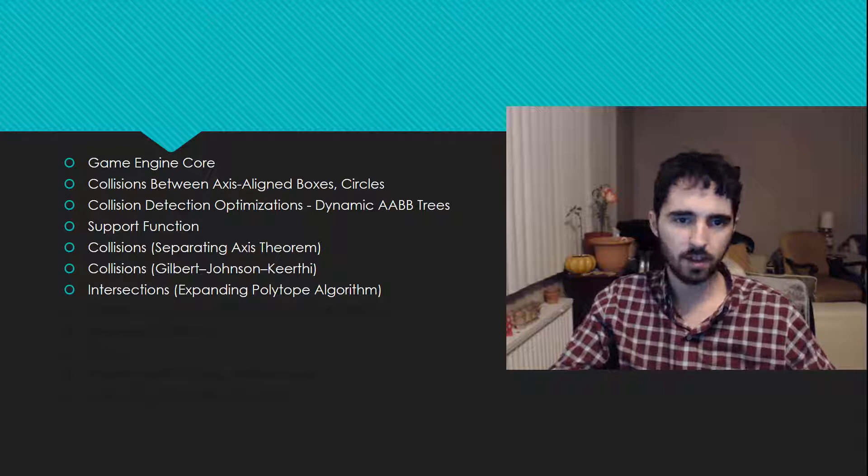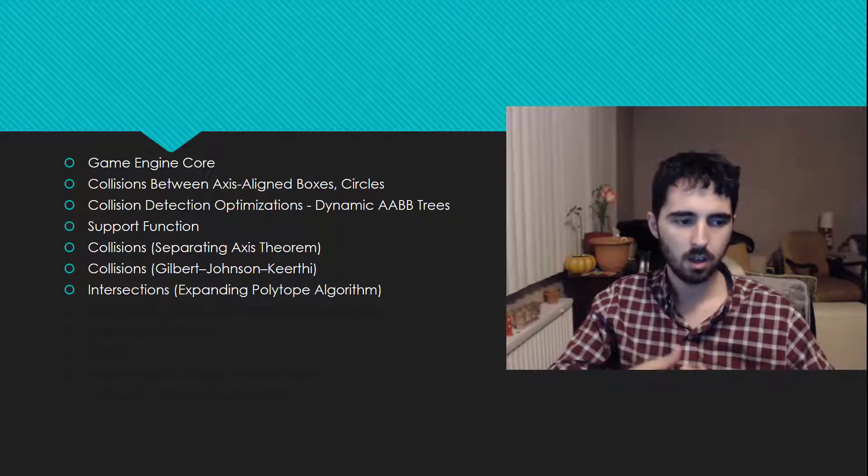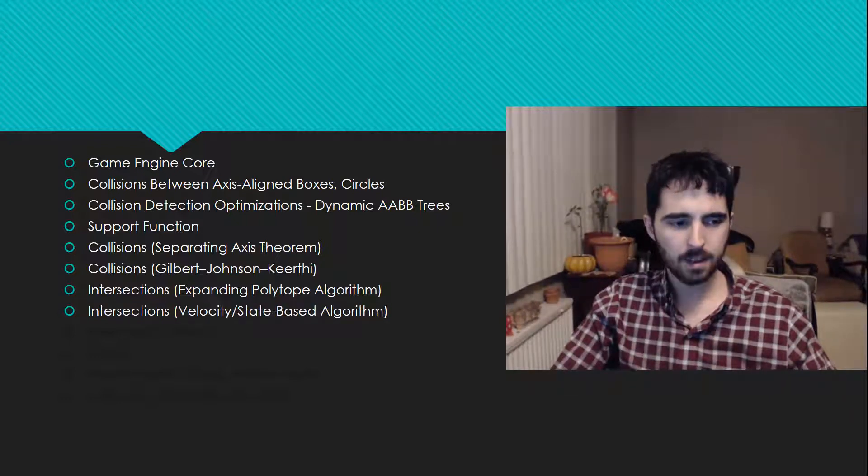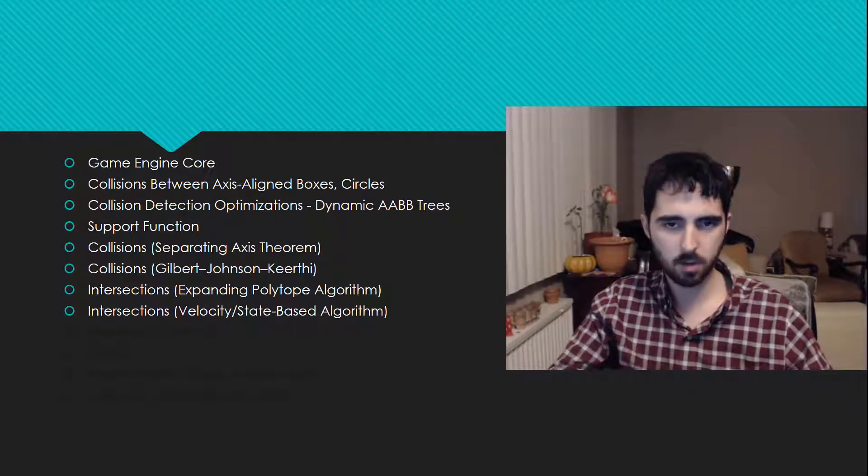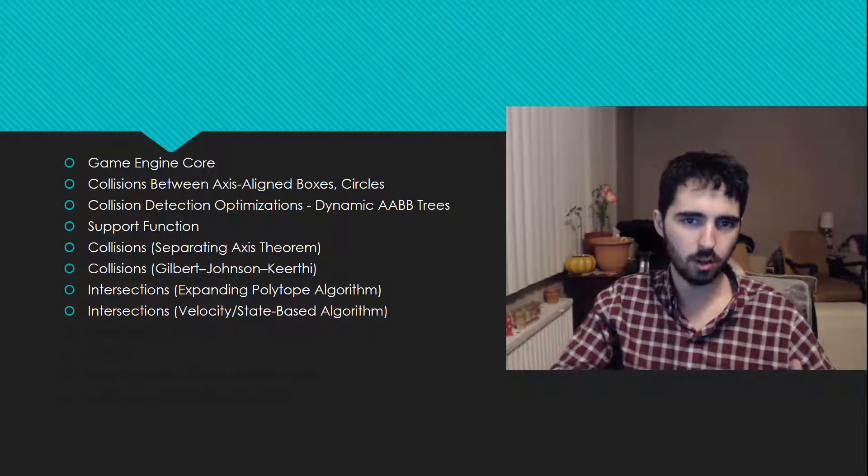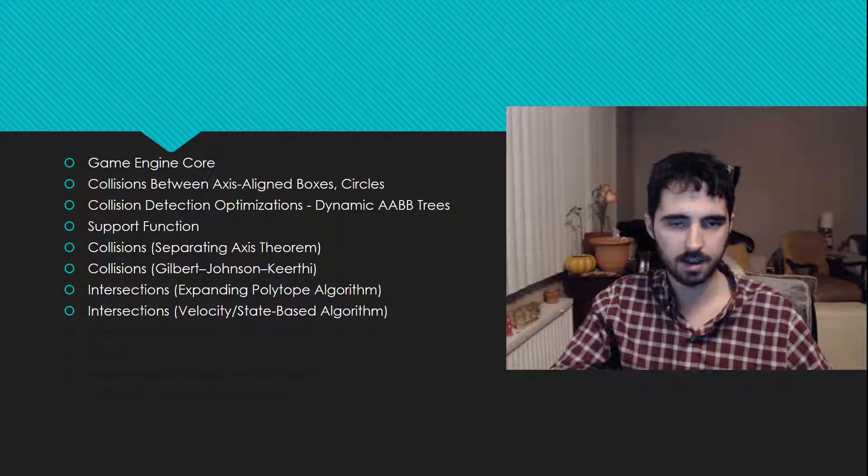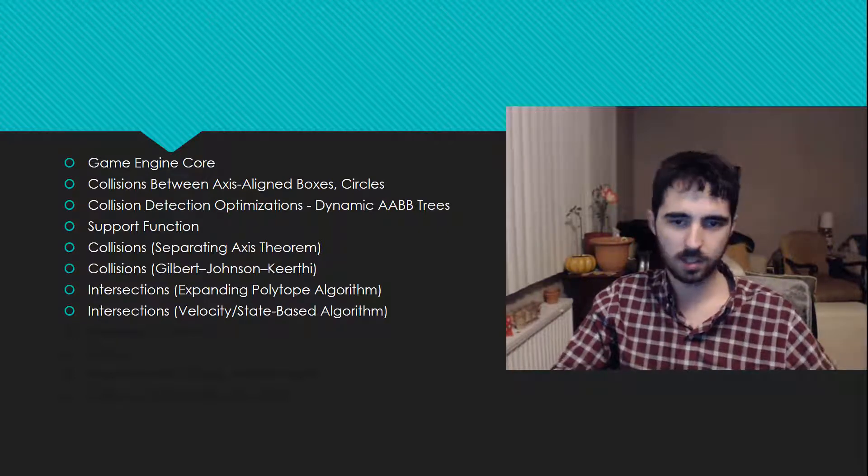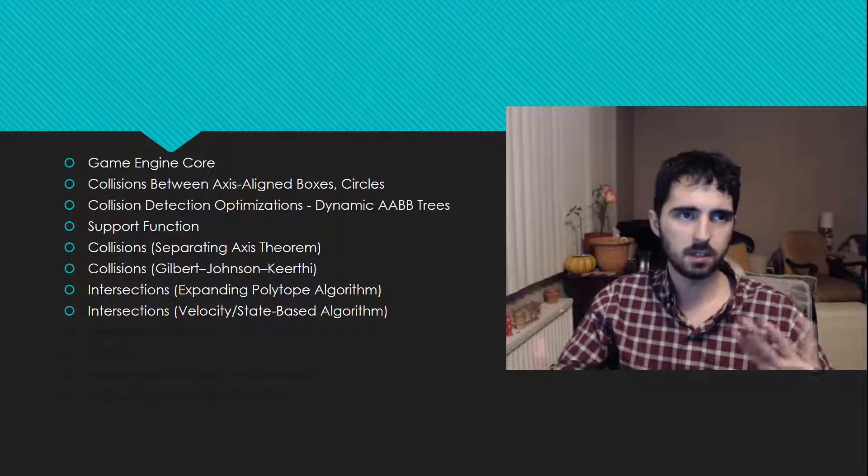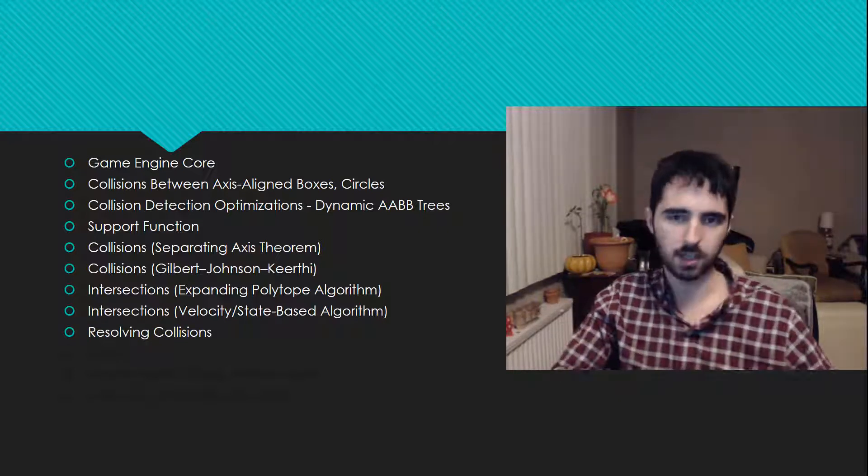Then we want to get into modeling collisions, by finding out which direction the collision is happening in, and what the penetration depth is, and things like that. We can do that using the expanding polytope algorithm. I'll briefly explain how that works. Because these GJK algorithms and expanding polytope algorithms are kind of difficult to understand, I'll briefly go over a much simpler alternative for anyone who wants to do this, that's going to be based on velocity and state of your objects. This is just a section on modeling the collisions so that we can resolve them.